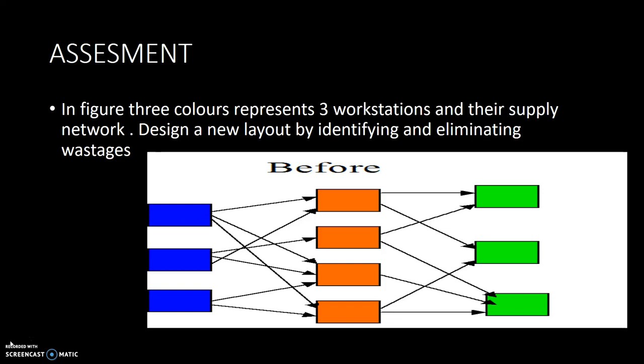Now I am going to give an assessment. Consider the figure where three colors represent three workstations and their supply network. You need to identify the wastages and eliminate them by designing a new layout. Pause this video and please answer the question in the comment section below. I hope you have understood the basic concepts of lean manufacturing. If you have any doubts, please feel free to post in my blog. Thank you.